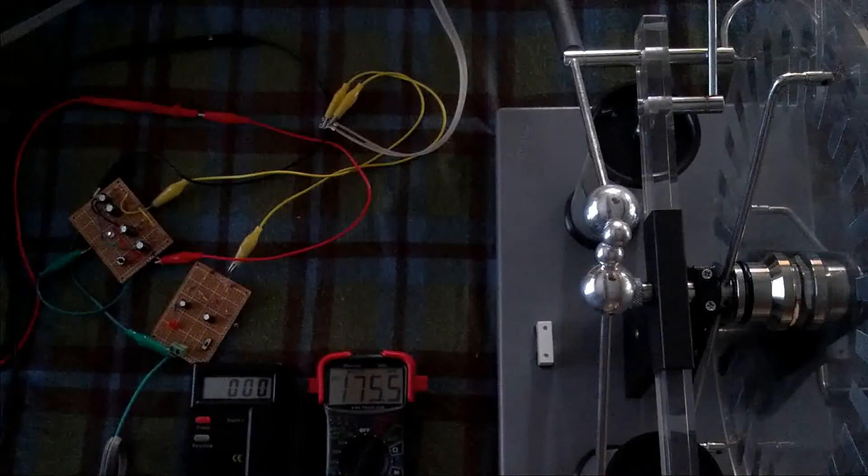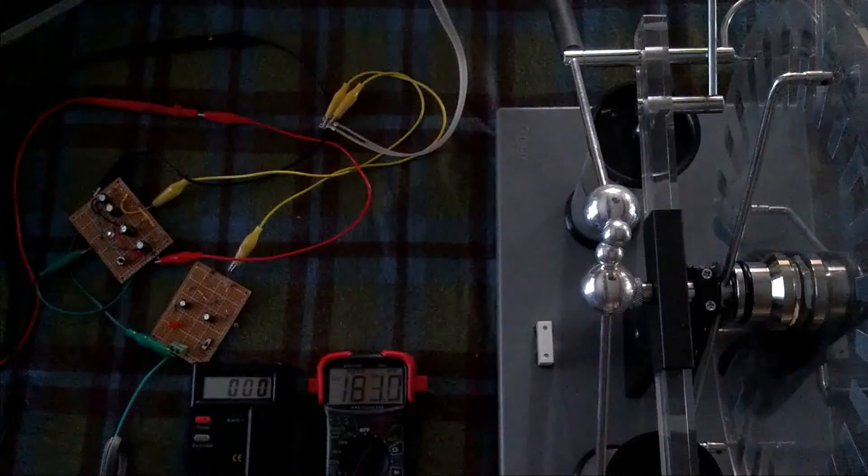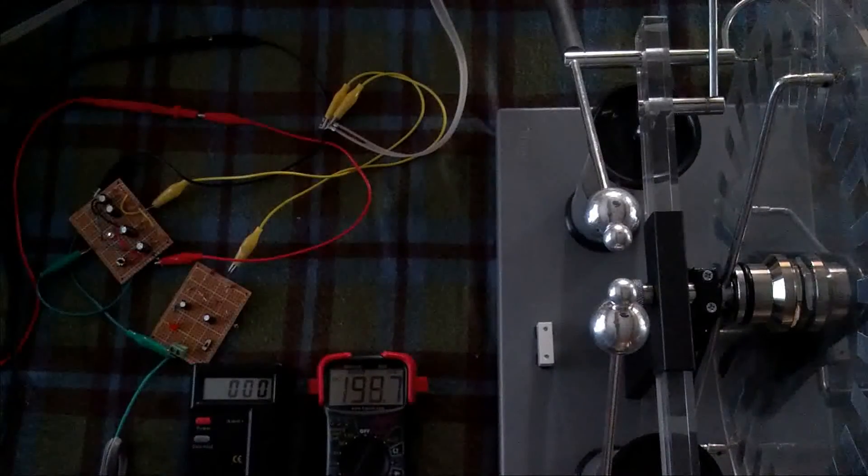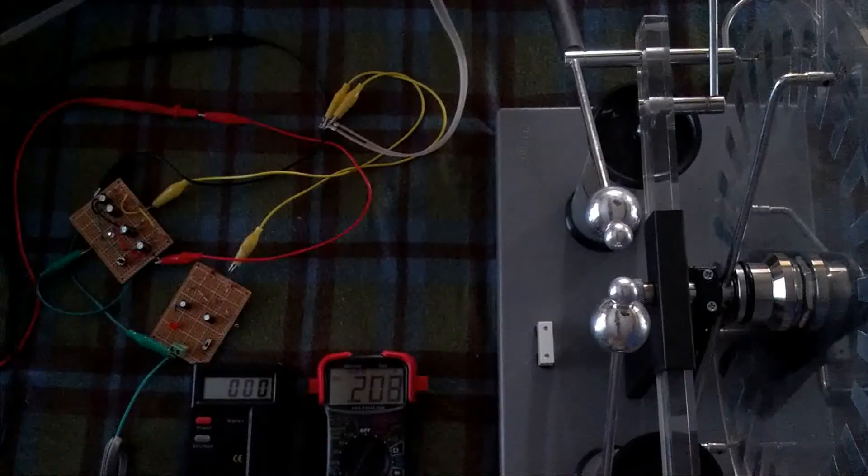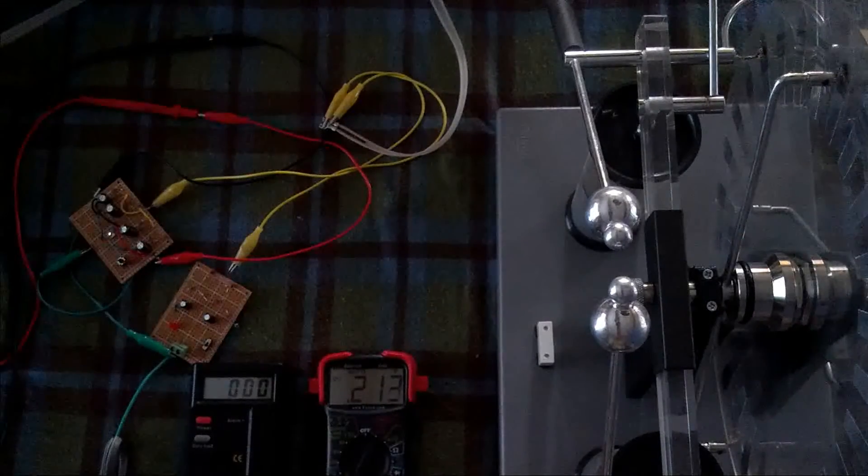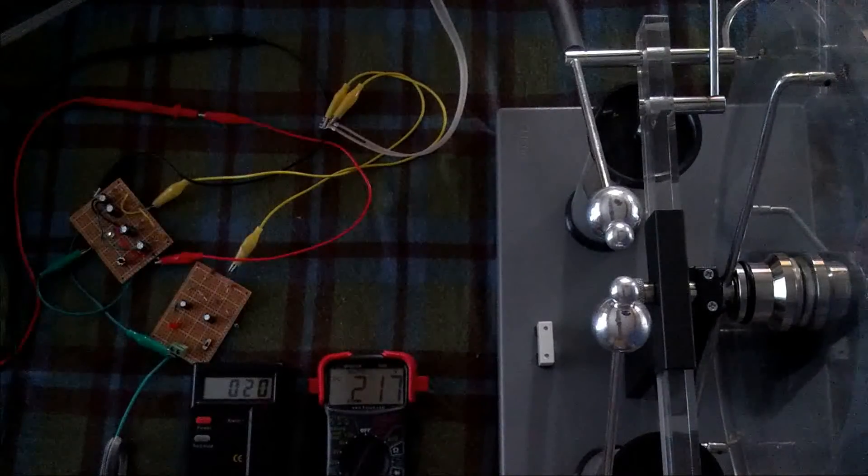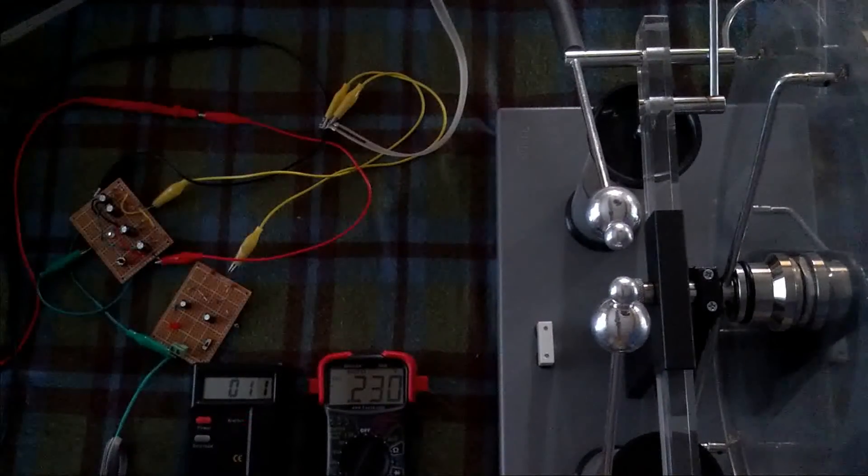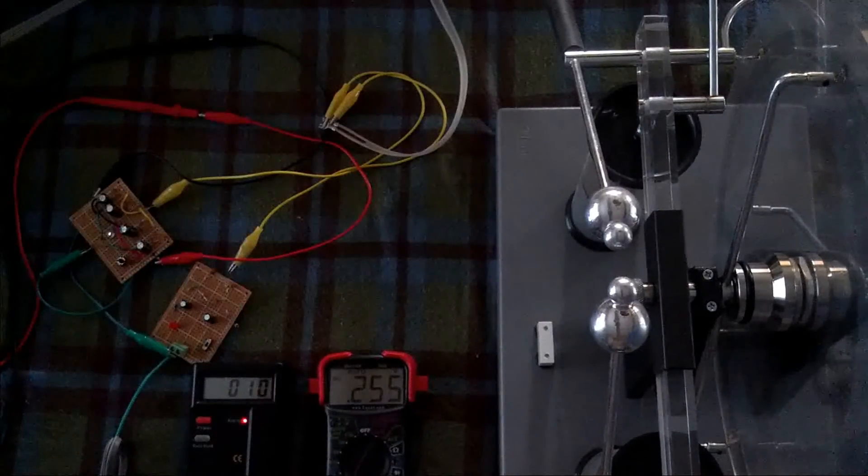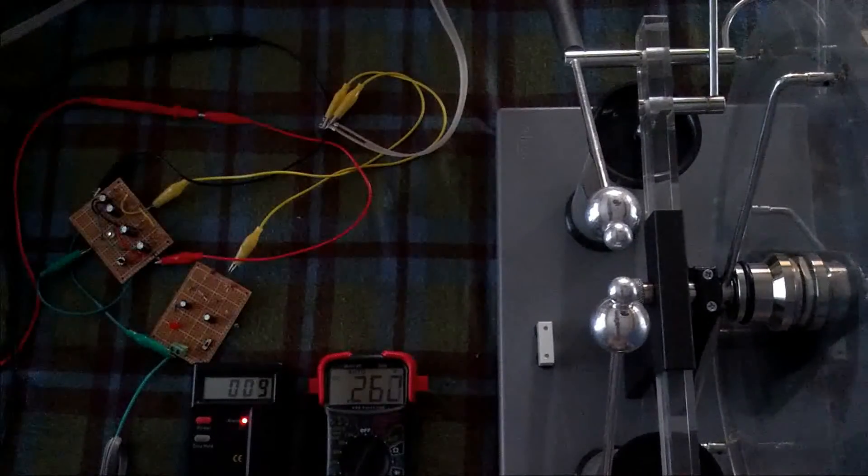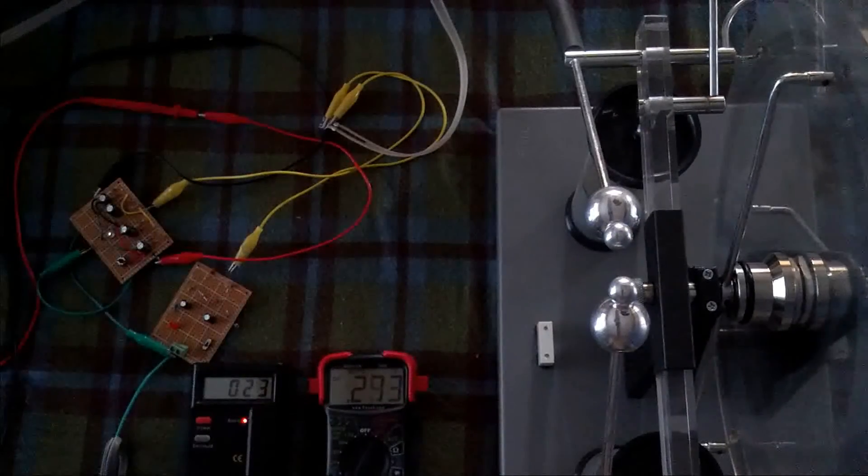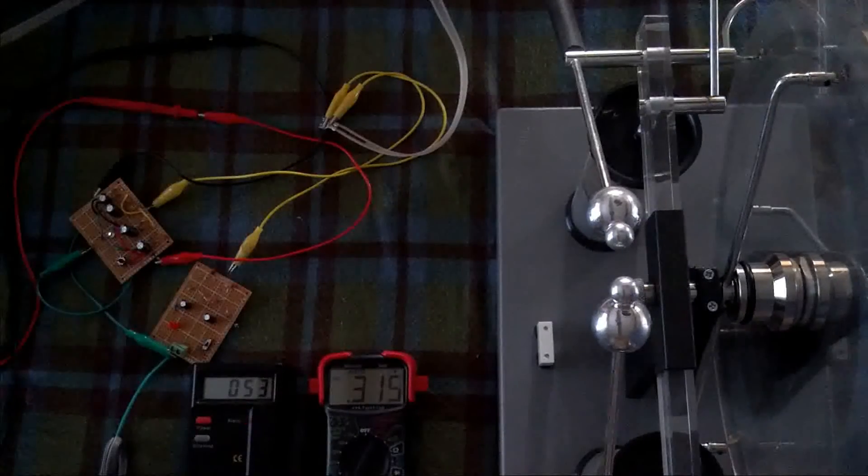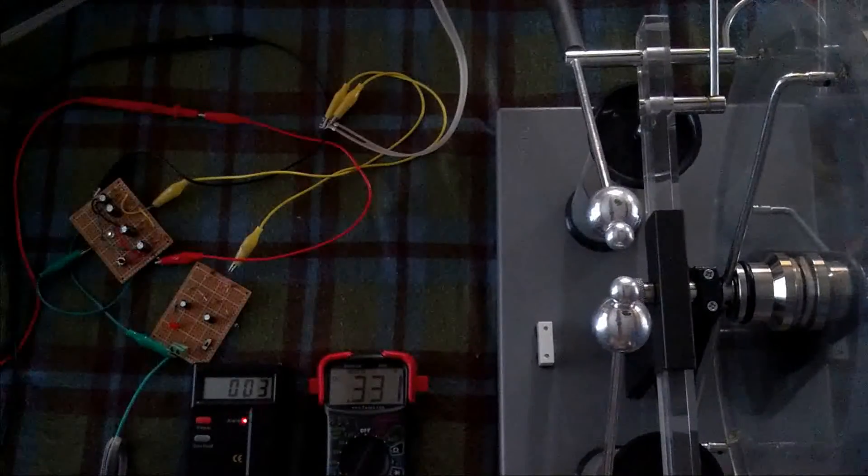And as you can see, I'm not getting any kind of EMF detection there. I'm going to spin my Wimshurst a little bit, just to show you that it's going to start to increase, and you will see the EMF or electromagnetic radiation detector start to go off. Alright, see? So we're up to 0.2 volts already.